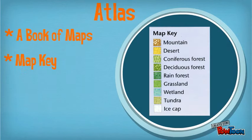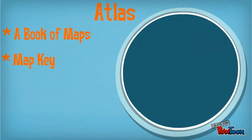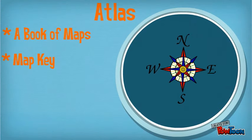Some key features in an atlas are map keys. The map key explains what each symbol of the map means. Another feature is the compass rose, which tells you which direction is north on the map.